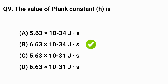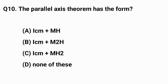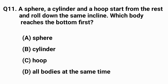Question number ten: the parallel axis theorem has the form — the right answer is option C: I_CM plus MH². Question number eleven: a sphere, a cylinder, and a hoop start from rest and roll down the same incline. Which body reaches the bottom first?